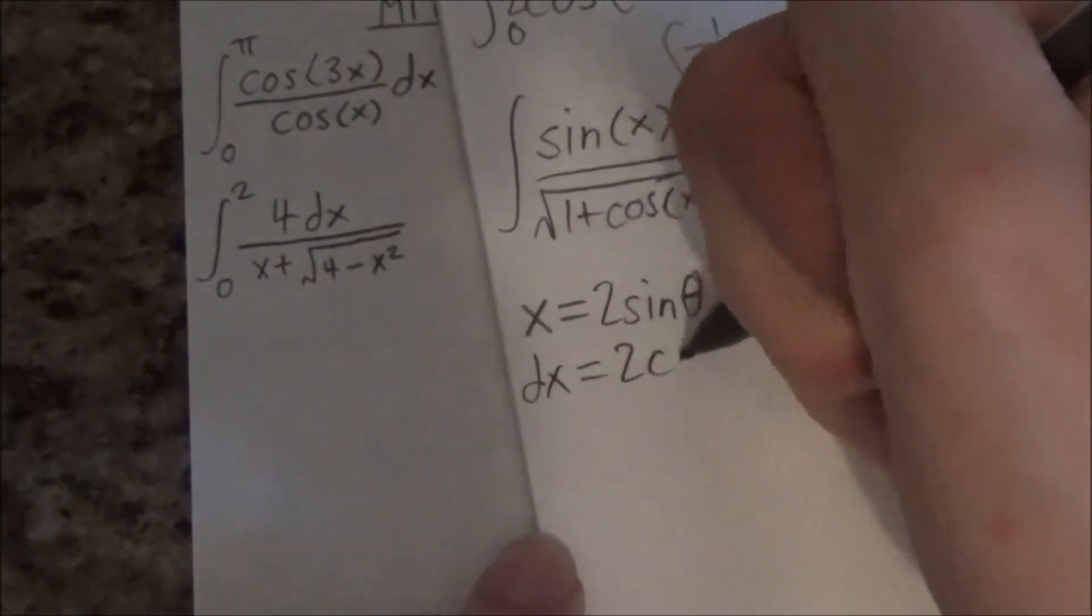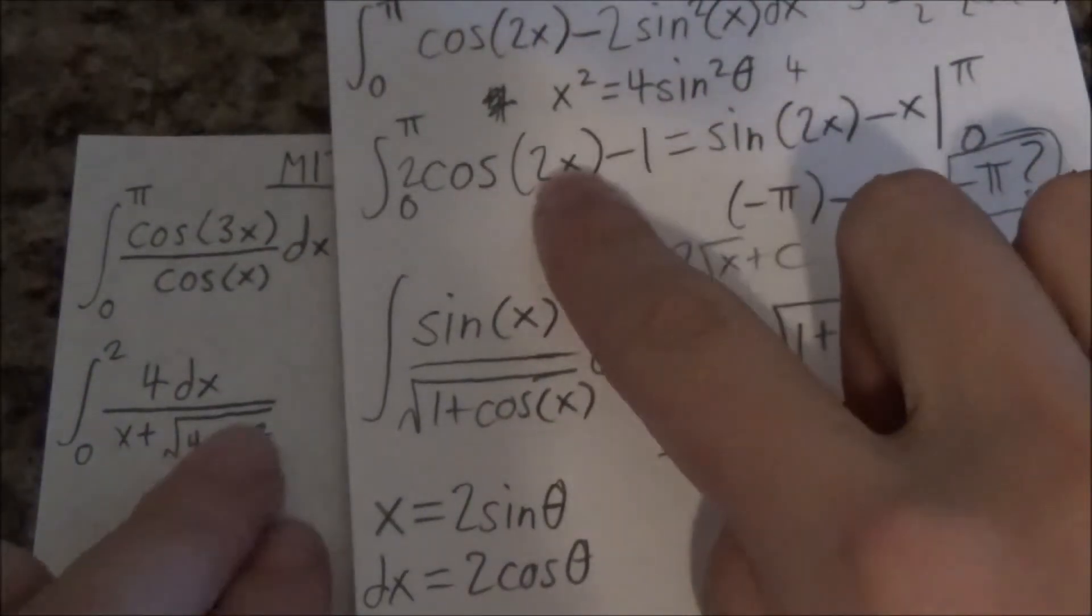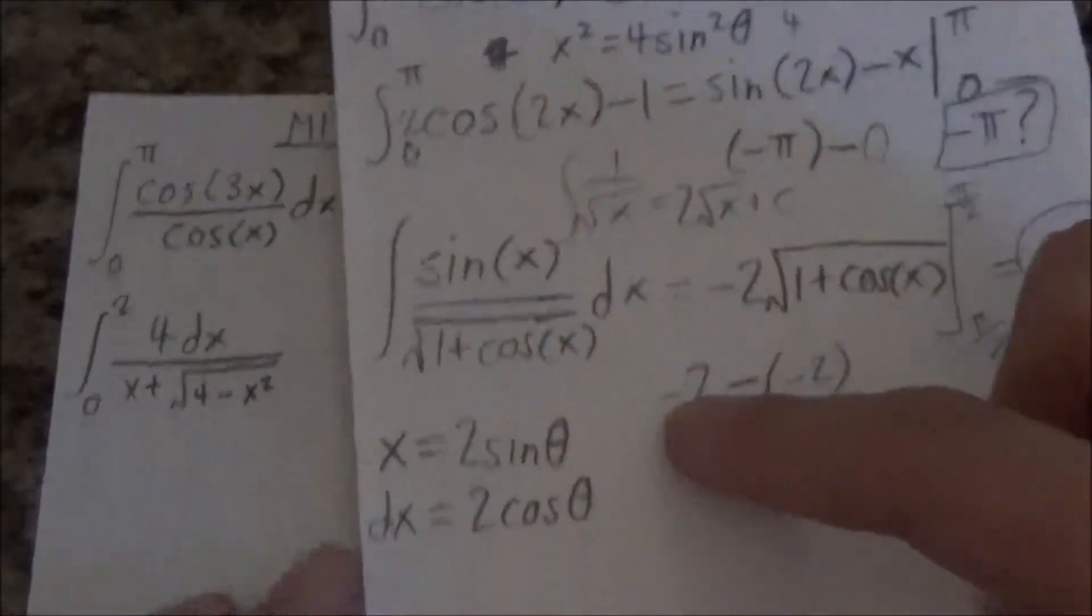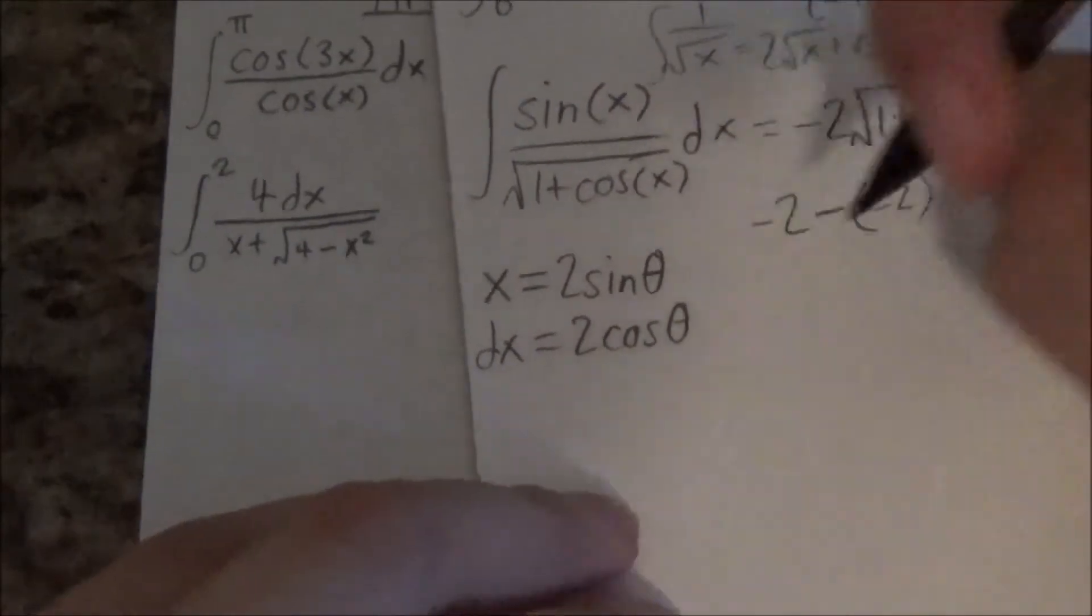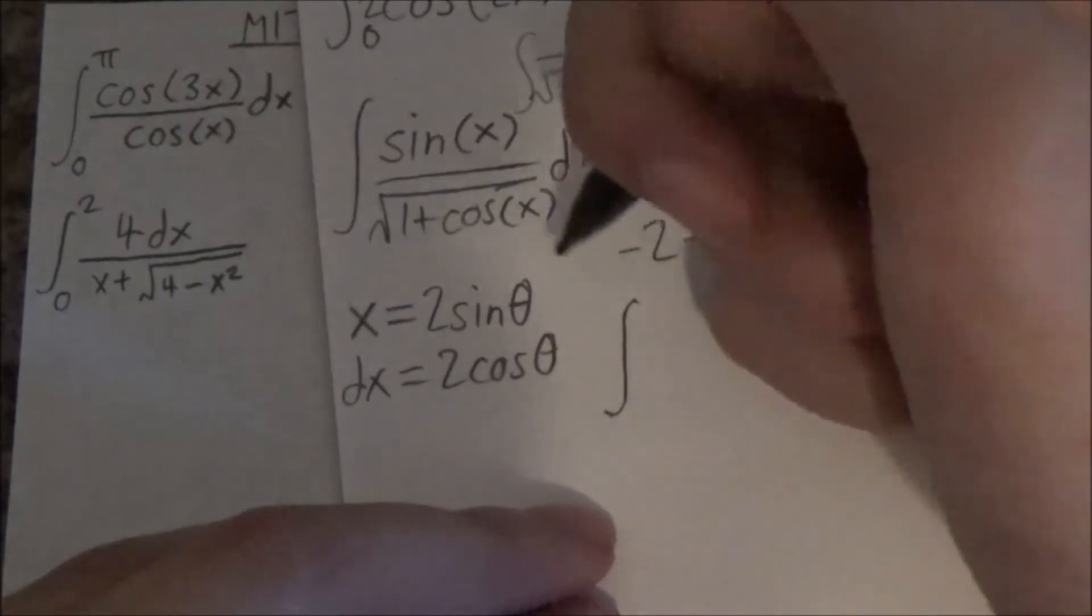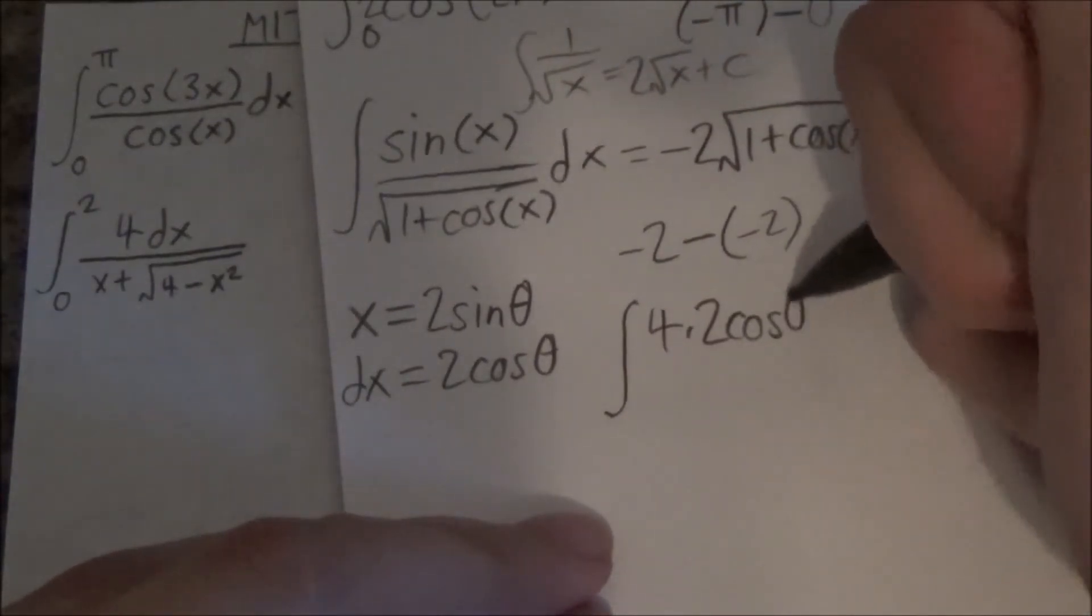So dx is 2 cosine theta. Okay. So what you could do is you just let x square equal 4 sine square and then solve for x. And you'll get to this. But I do things very fast. Okay I'm lying, no I don't do things fast. But 4 times 2 cosine theta d theta.